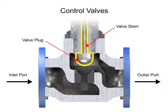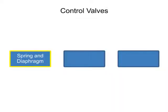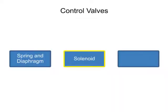Three actuator types are used in control valves, and they include spring and diaphragm, solenoid, and motor.